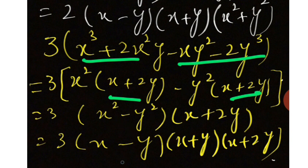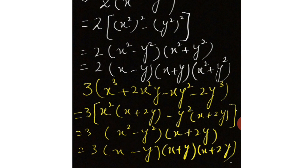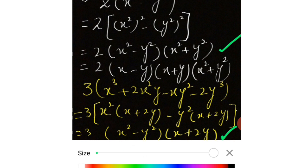Aur x² minus y² ke upar wale same factors yahan ban jaenge. Ab yeh hamare paas question ban chuka hai. Is question mein do expressions ban chuki hain — ek toh yeh wali aur ek yeh wali. Ab humne ismein common factor aur uncommon factor nikalne hain. Main aapko yahan pehle bata deti hoon ki ismein hamare paas common factor kaun se hain aur uncommon factor kaun se hain.